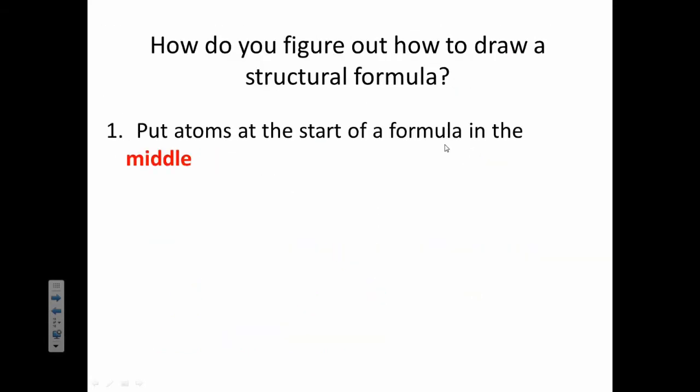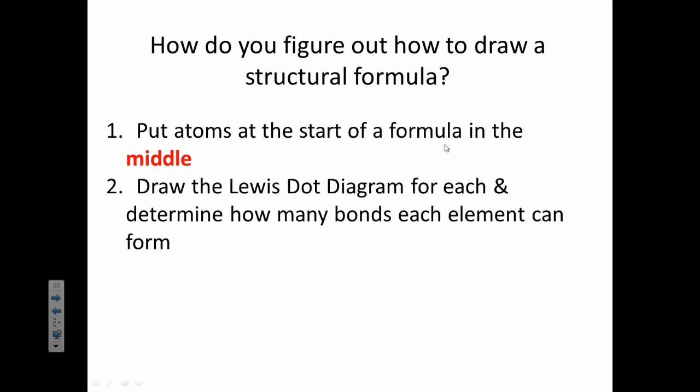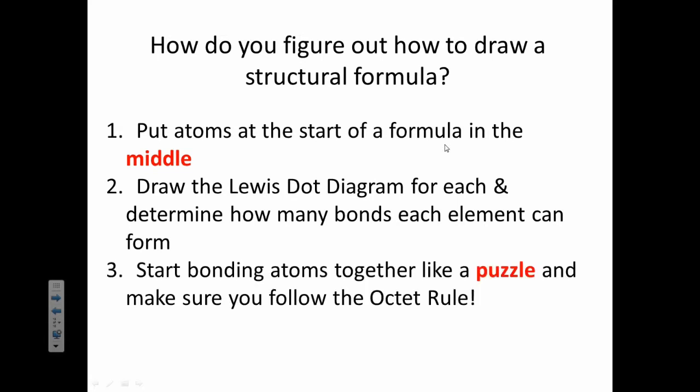How do you draw a structural formula? Here are some guidelines. Put atoms that are at the start of the formula in the middle. Then, actually draw the Lewis dot diagrams for each and figure out how many bonds that they can form. Try to aim lonely electrons at each other for connections. Then just start bonding them together like a puzzle. Make sure you follow the octet rule.